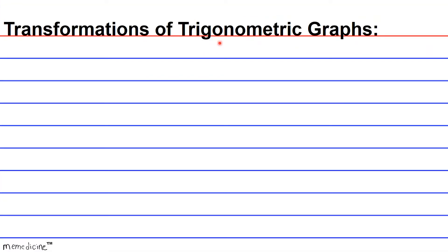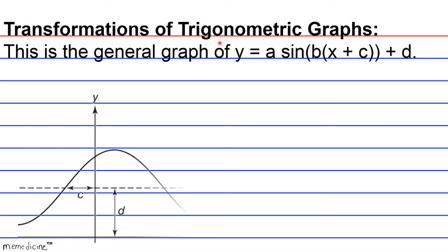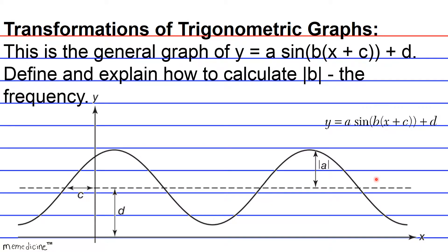Transformations of trigonometric graphs. This is the general graph of y equals a sine of b, x plus c, plus d. Define and explain how to calculate the absolute value of b, the frequency, specifically the frequency of the sine graph.